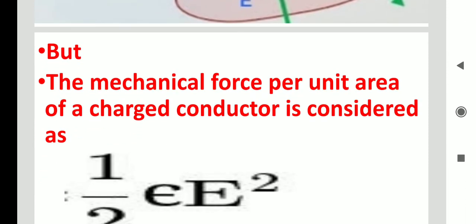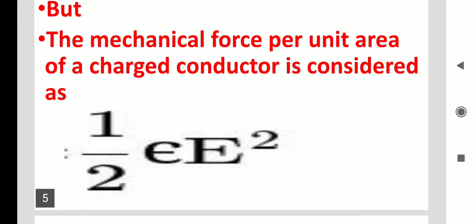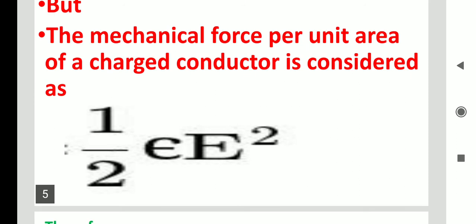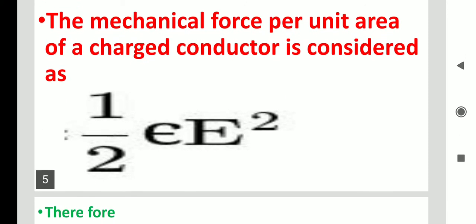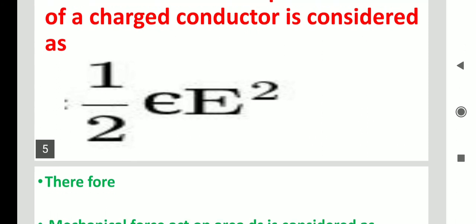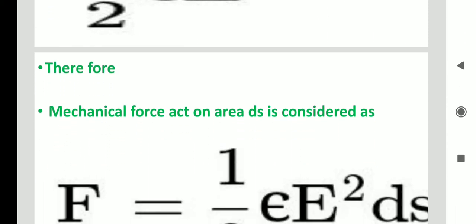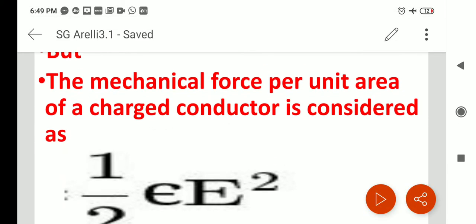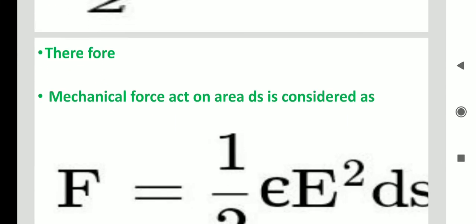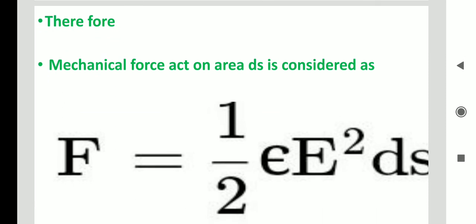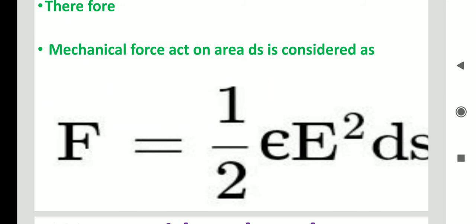The mechanical force per unit area of a charged conductor is considered as ½εE². So the mechanical force acting on area ds is: F = ½εE²·ds.